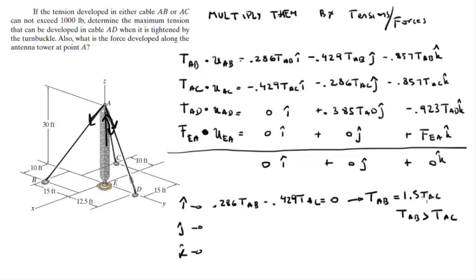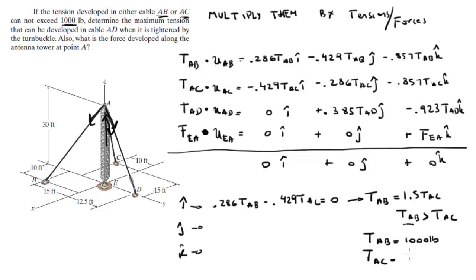Since T_AB is the larger tension, we set T_AB = 1000 pounds — the maximum the system can support. The problem only restricts AB and AC (not AD). From T_AB = 1.5·T_AC, we get T_AC = 1000 / 1.5 = 666.67 pounds. We've already found two of the three cable tensions.